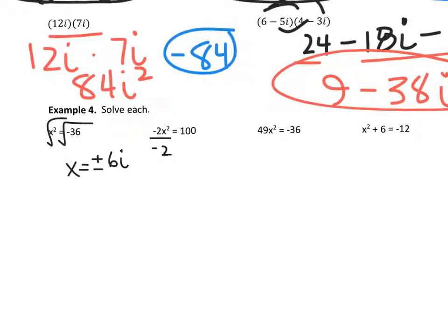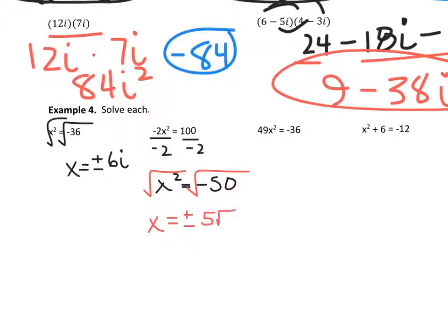For the second one, I'm going to divide both sides by negative 2 first, and I get x squared equals negative 50. Then I take the square root, so x equals plus or minus the square root of negative 50. The square root of negative 50 breaks down into 5 root 2, with an i with it. I've seen textbooks write the i afterwards, and I've also seen it written in the middle — you can write it either way.